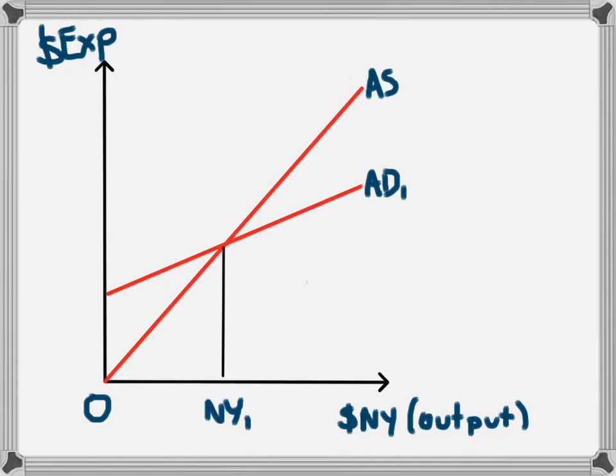An expansionary fiscal policy occurs when the government increases its spending compared to the year before. An increase in spending will lead to an increase in national income and this can be shown on the diagram.